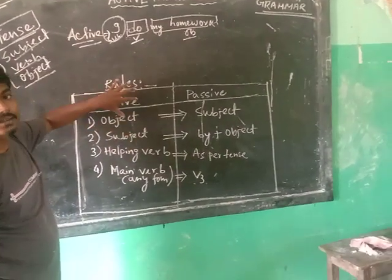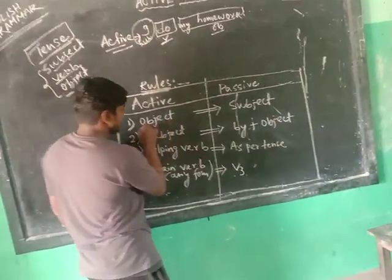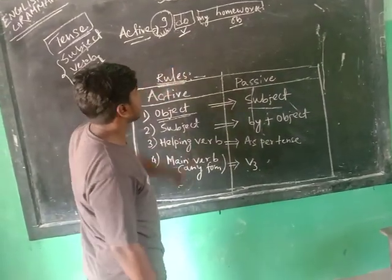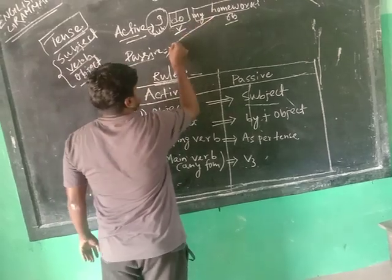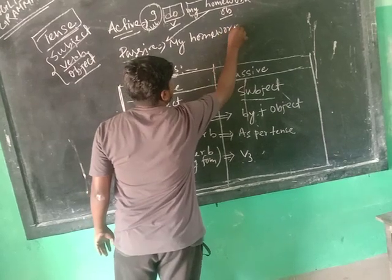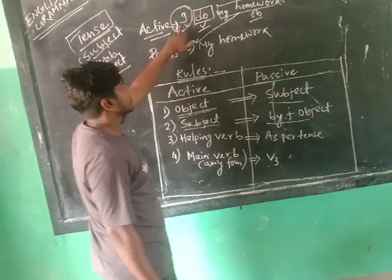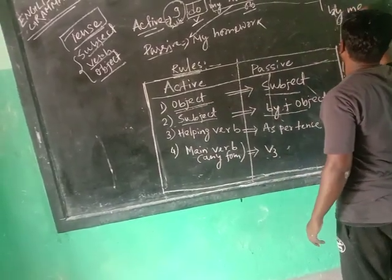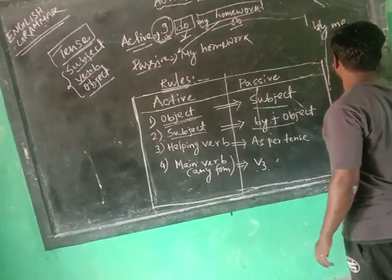The first rule is: the object in active voice will become the subject in passive voice. So 'my homework' becomes the subject. The second rule is: the subject becomes the by-class object. The subject 'I' will change to 'by me', using the objective form of the pronoun. So 'I' will change to 'me'.